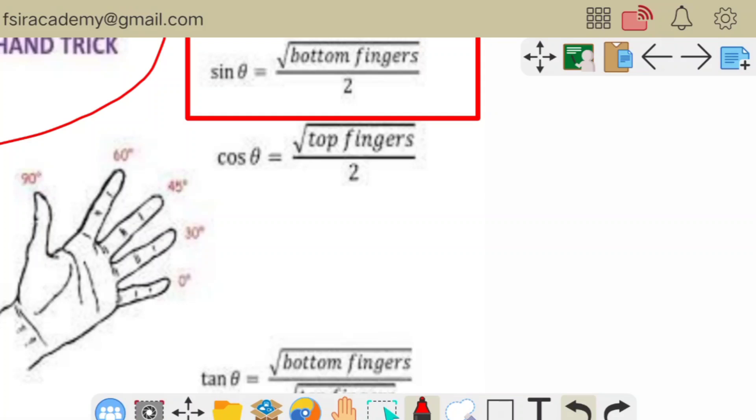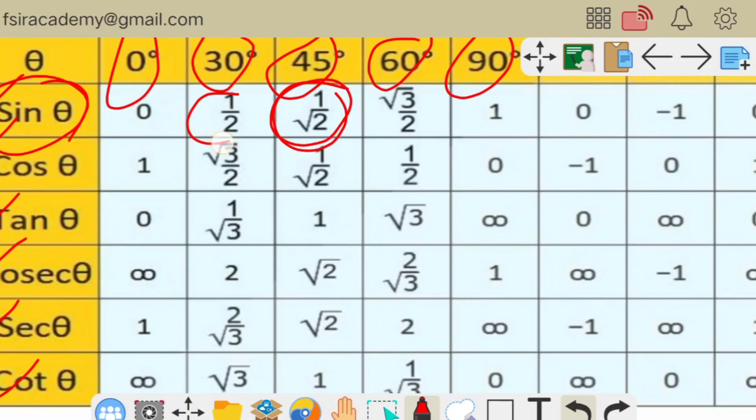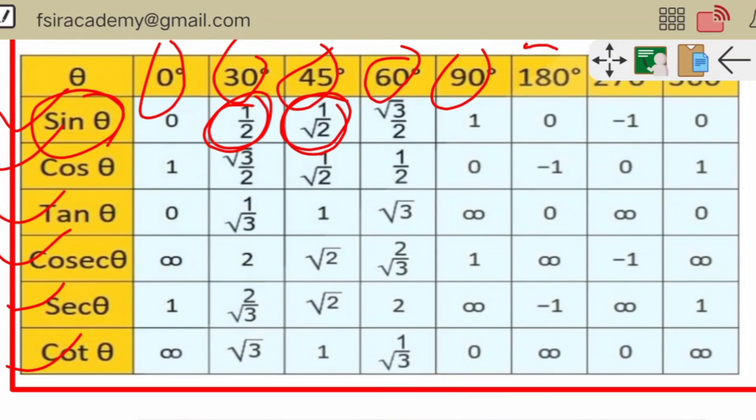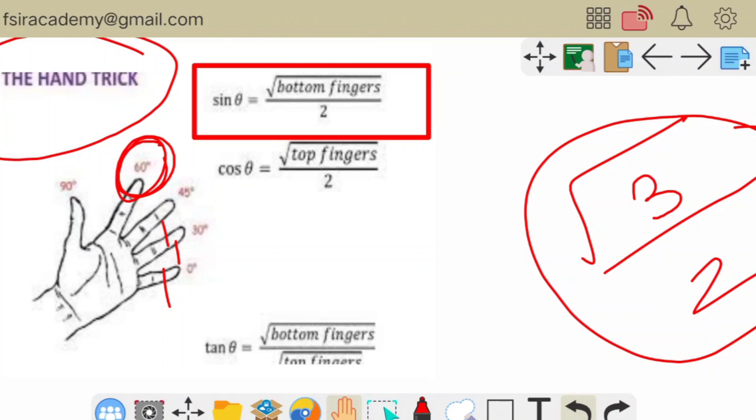If you find out the value of sine 30 degree, 30 degree has one finger, so root one divided by two, so sine 30 degree equal to one by two. If we have to find sine 60 degree, 60 degree bottom finger has three fingers, so root three by two. Sign 60 degree equal to root three by two. In this way you can find 0 degree, 30 degree, 45 degree, 60 degree, 90 degree.